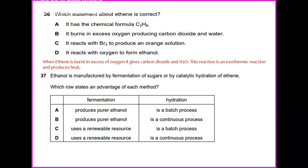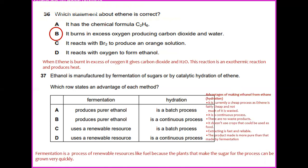Ethanol is manufactured by fermentation of sugars or by catalytic hydration of ethene. Which row states an advantage of each method? If you look at advantages of making ethanol from ethene which is hydration, it is currently a cheap process as ethene is fairly cheap and not much of it is wasted. And it is a continuous process.